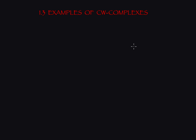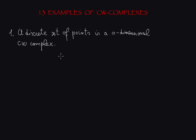We see now a few easy examples of CW complexes. The easiest one can think of is just a discrete set of points, and this can be regarded as a zero-dimensional CW complex. If you look at the definition, this was the first step in the construction of a CW complex, and we just stop there and do not proceed with attaching any other cell.